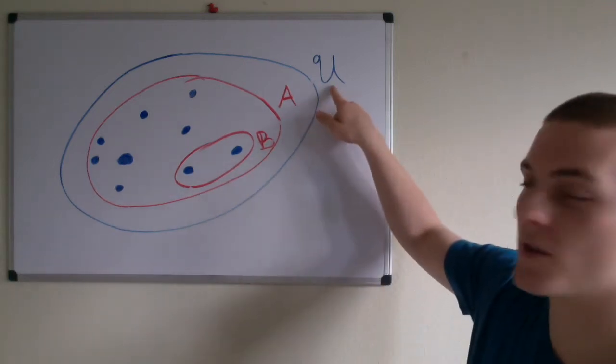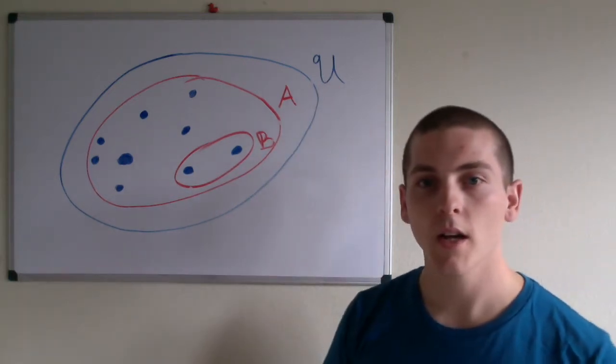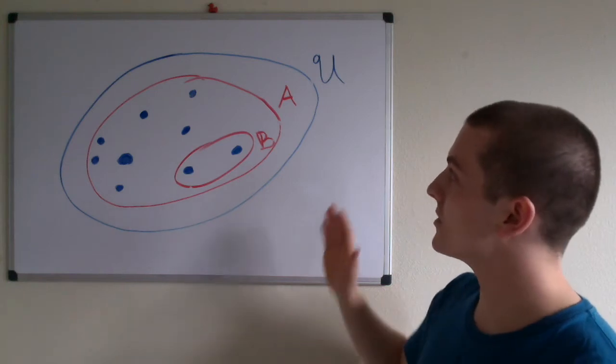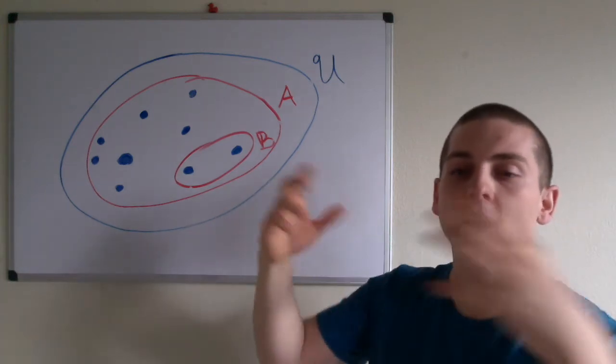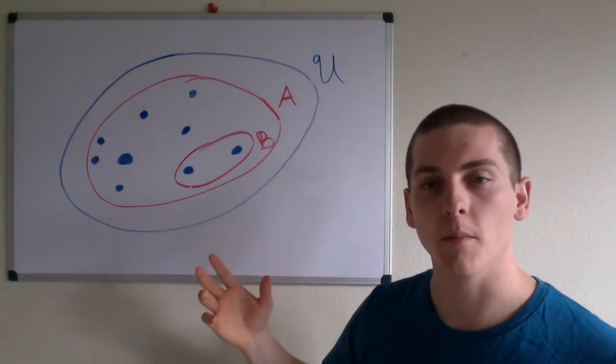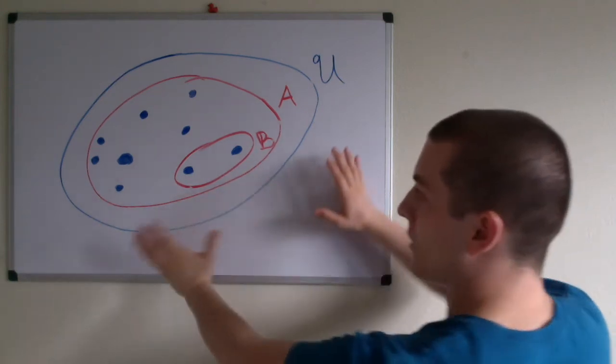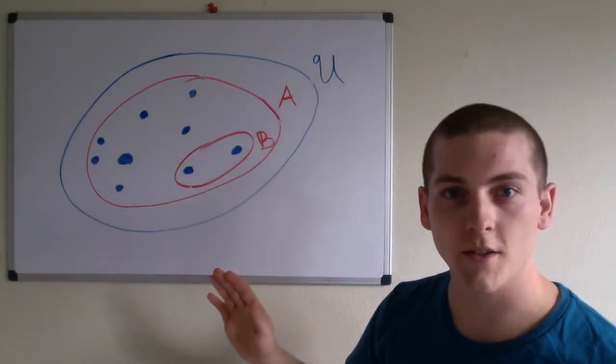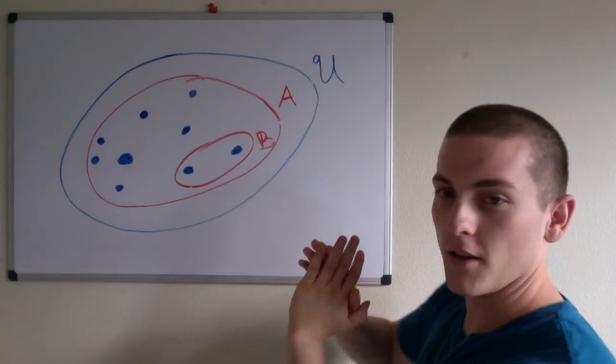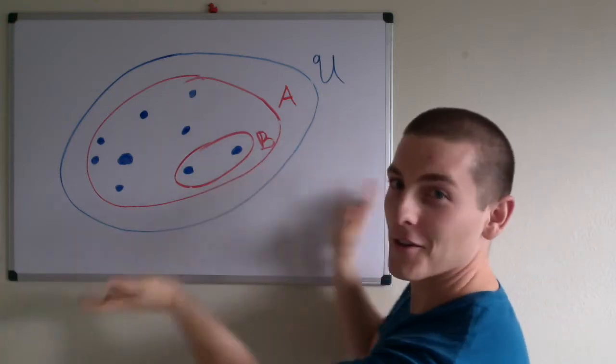Now, the reason I use this fancy looking U here is that I was defining the universe, which is to say the maximum boundaries of my set, my biggest set. Everything outside of this blue circle here doesn't exist. I mean, in terms of the sets, nothing exists.